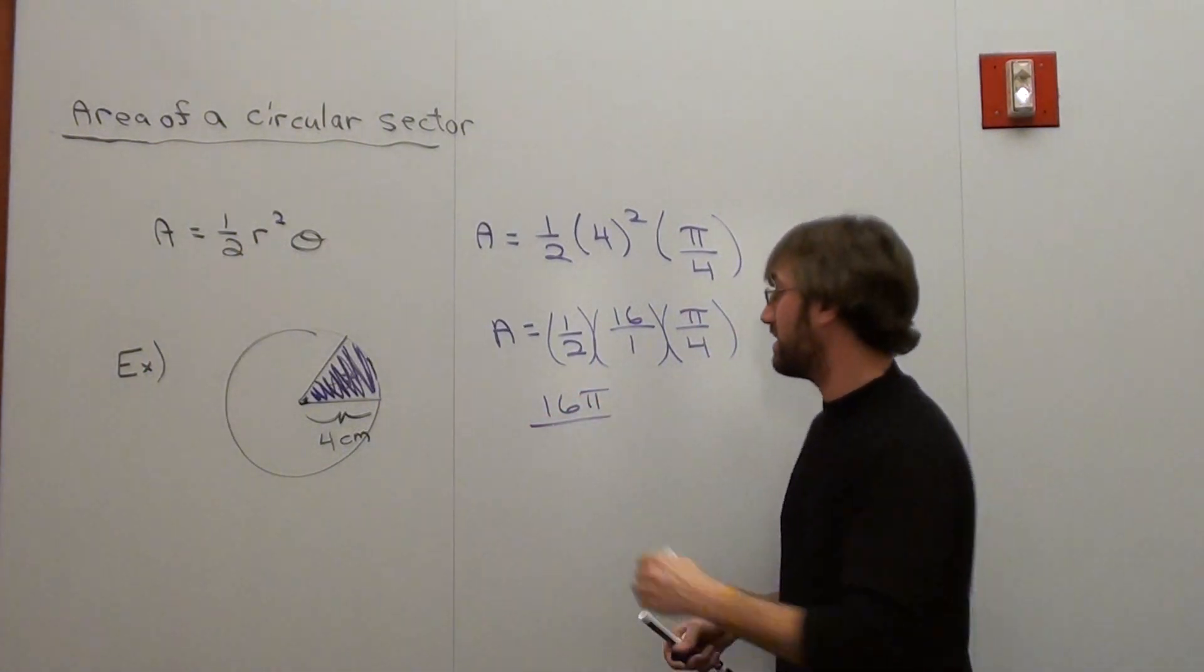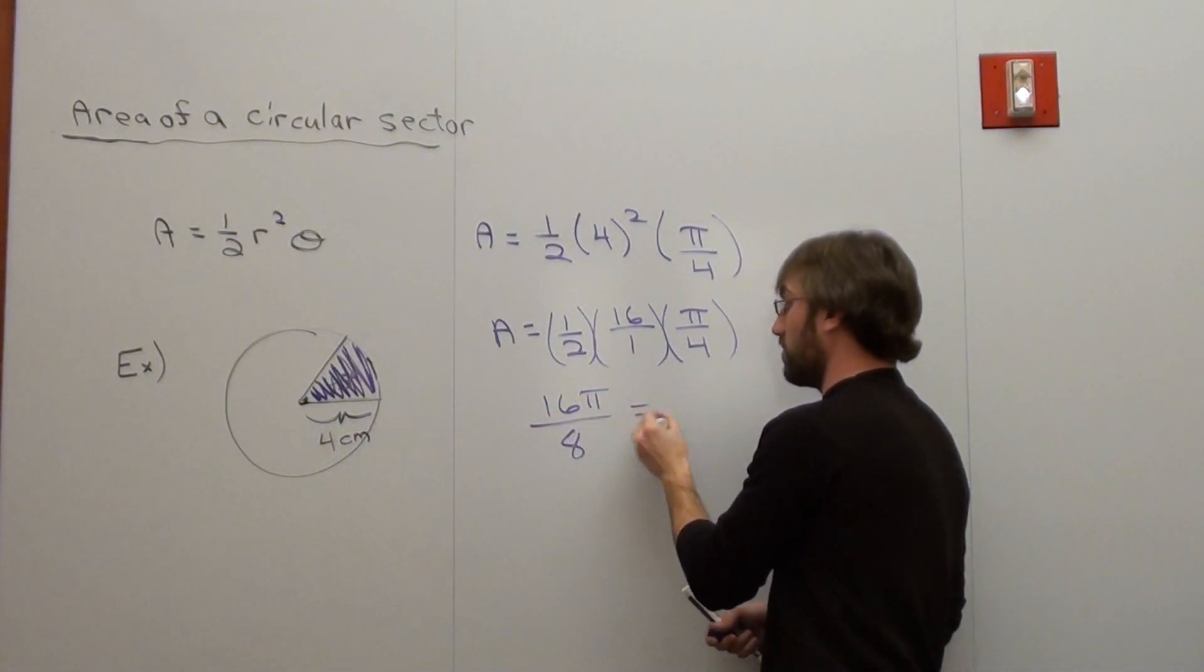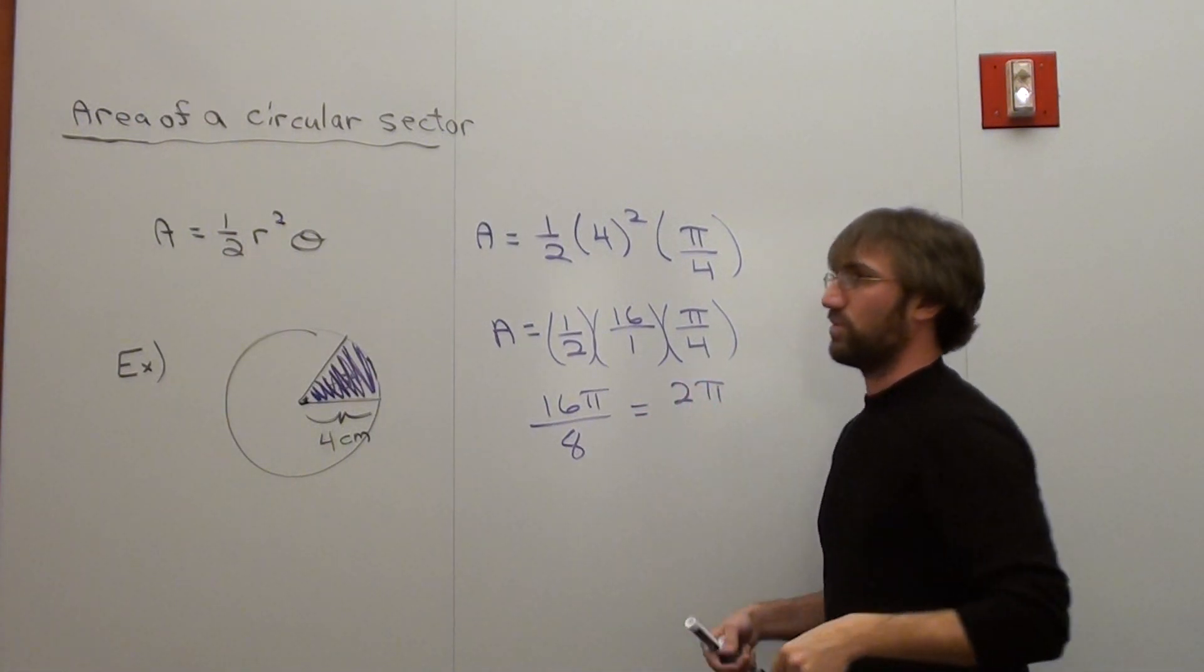2 times 1 times 4 is 8. That's equal to 2 pi. That's roughly 6.28.